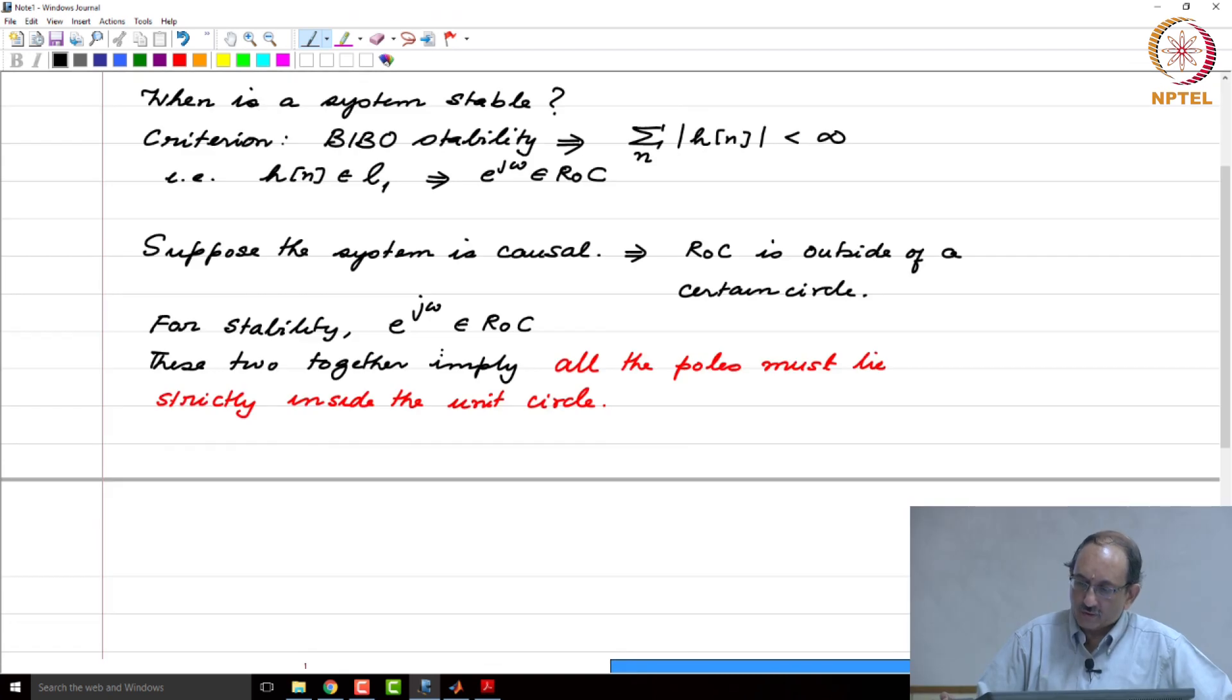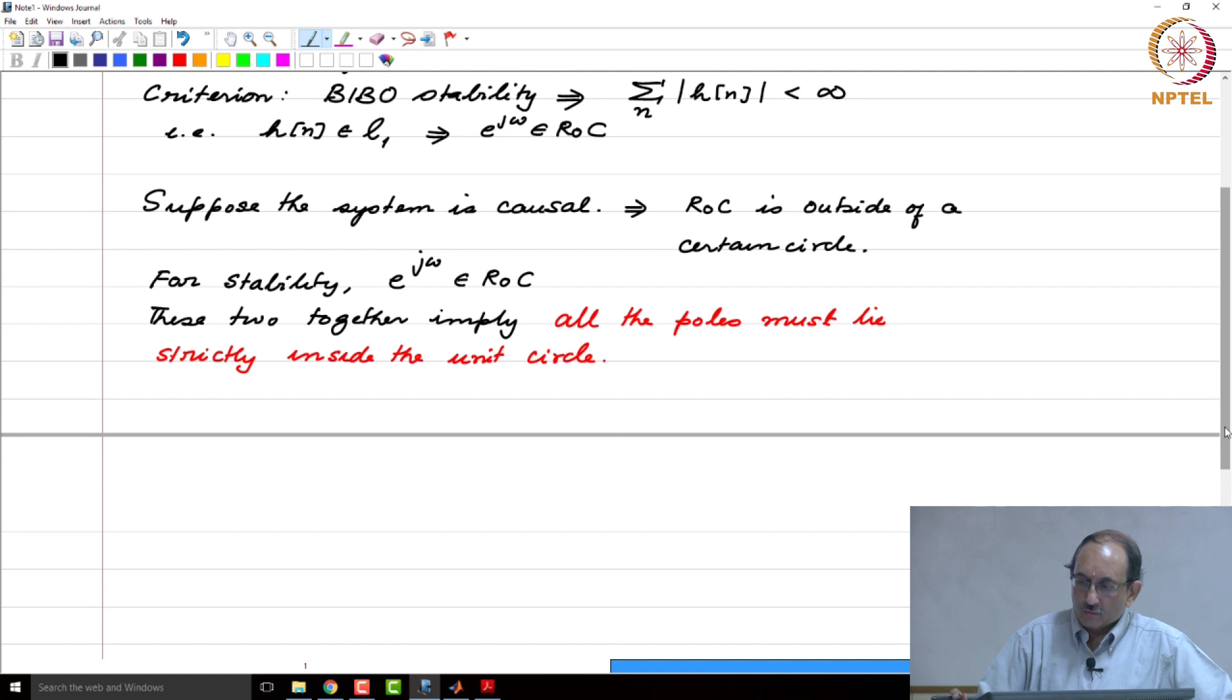This is analogous to what was happening in the continuous time case. There, if the signal is right sided, then the ROC is to the right of a certain vertical line. And if the system is stable, the impulse response must be absolutely integrable, which means the j omega axis must be part of the region of convergence.